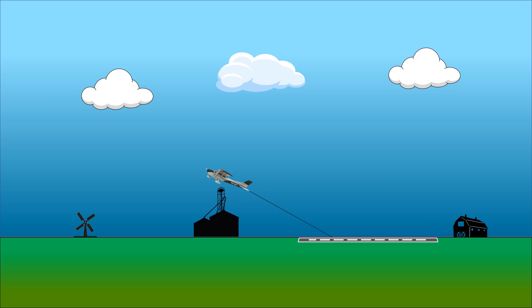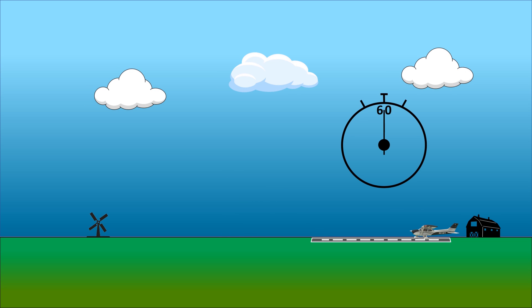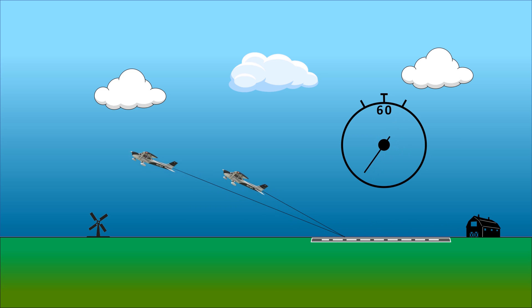VX is the speed that gives the best angle of climb — the largest altitude gained for a given distance traveled over the ground. It's ideal for clearing obstacles in the departure path. VY gives the best rate of climb. It's the fastest way to get to a given altitude and is usually what we fly on departure when we're not concerned with obstacles.